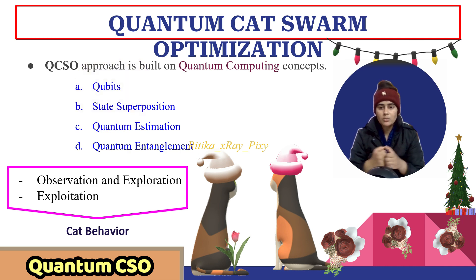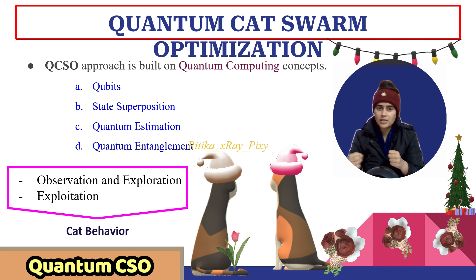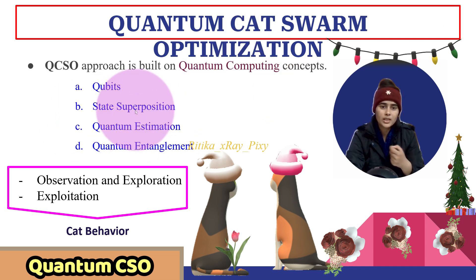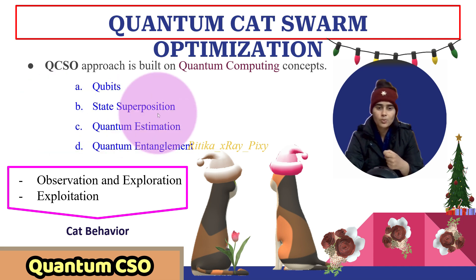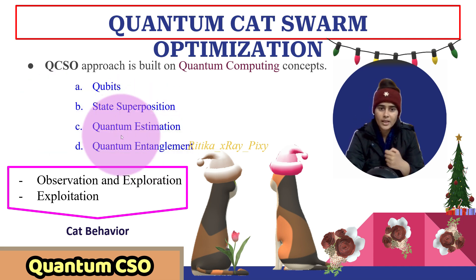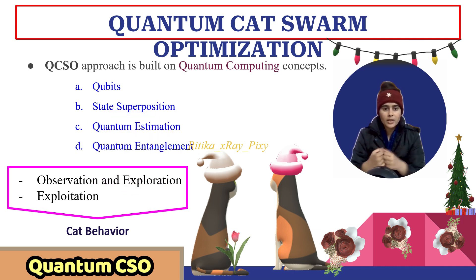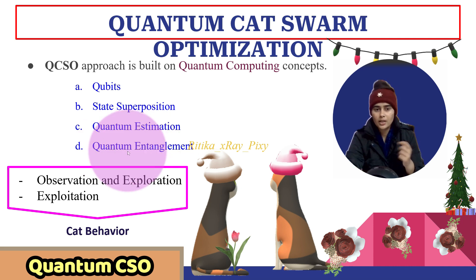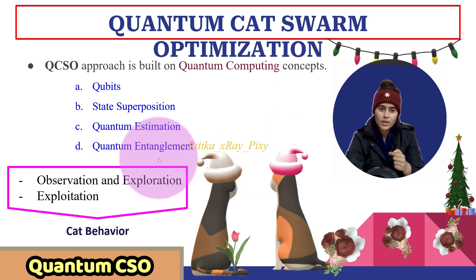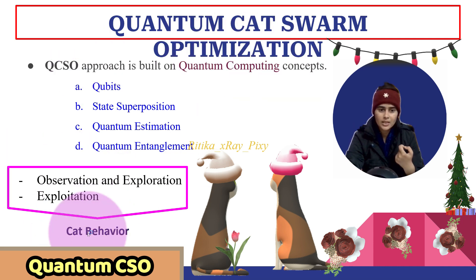Quantum computing principles such as qubits — also known as quantum bits — are used. In quantum computing, information is represented using qubits, and qubits can exist in multiple states simultaneously using the principle of superposition. Next quantum computing principle is superposition: according to this, the qubit can exist in multiple superposition states simultaneously. Next, we have quantum entanglement — quantum entanglement allows the state of qubits to be correlated, where the state of one qubit directly affects the state of another qubit.